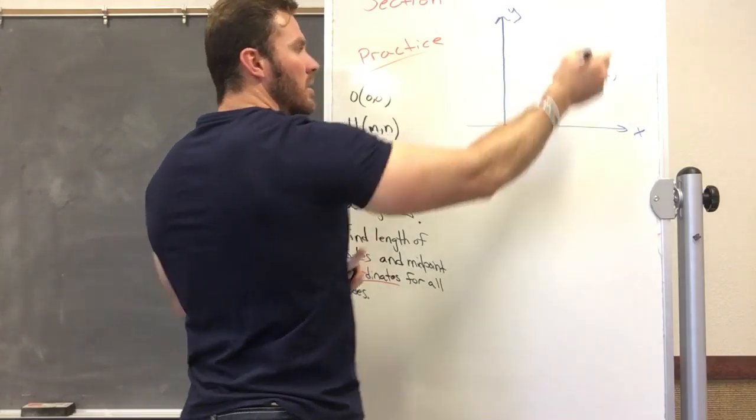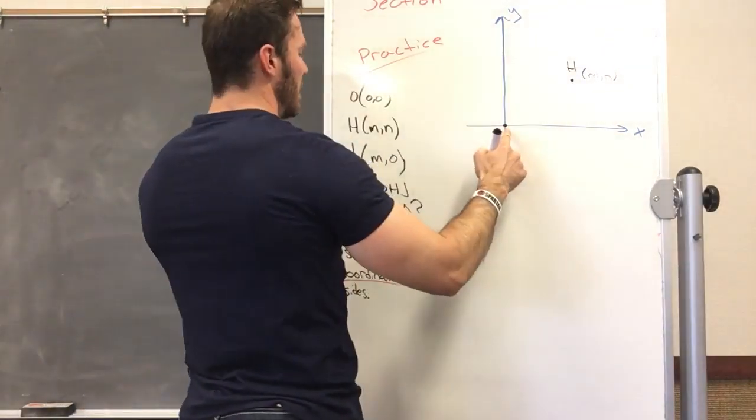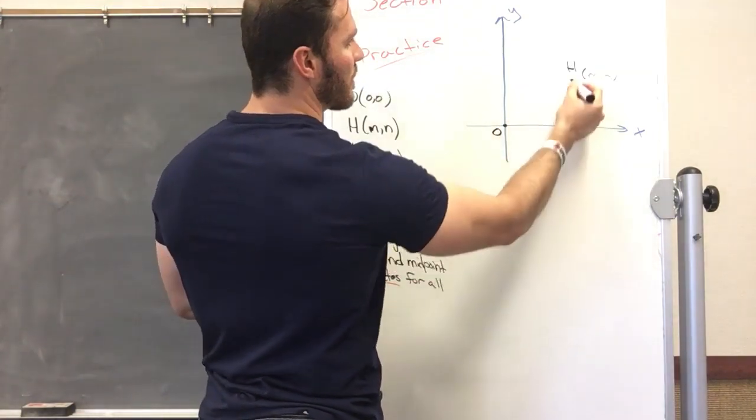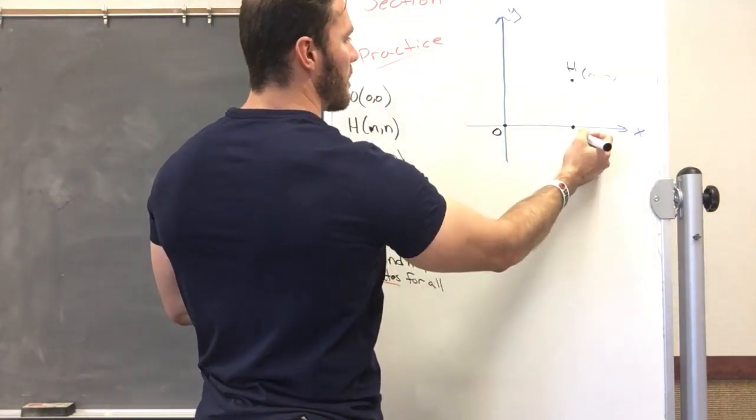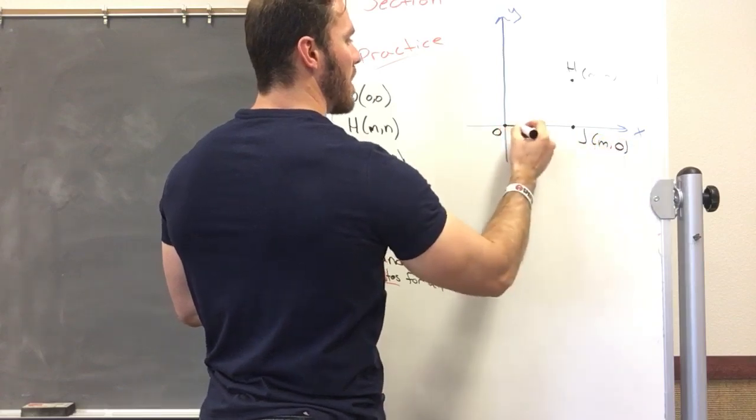And J is at—I went over M and it's on the zero, so it's zero for the Y—at (M, 0). There is my triangle.